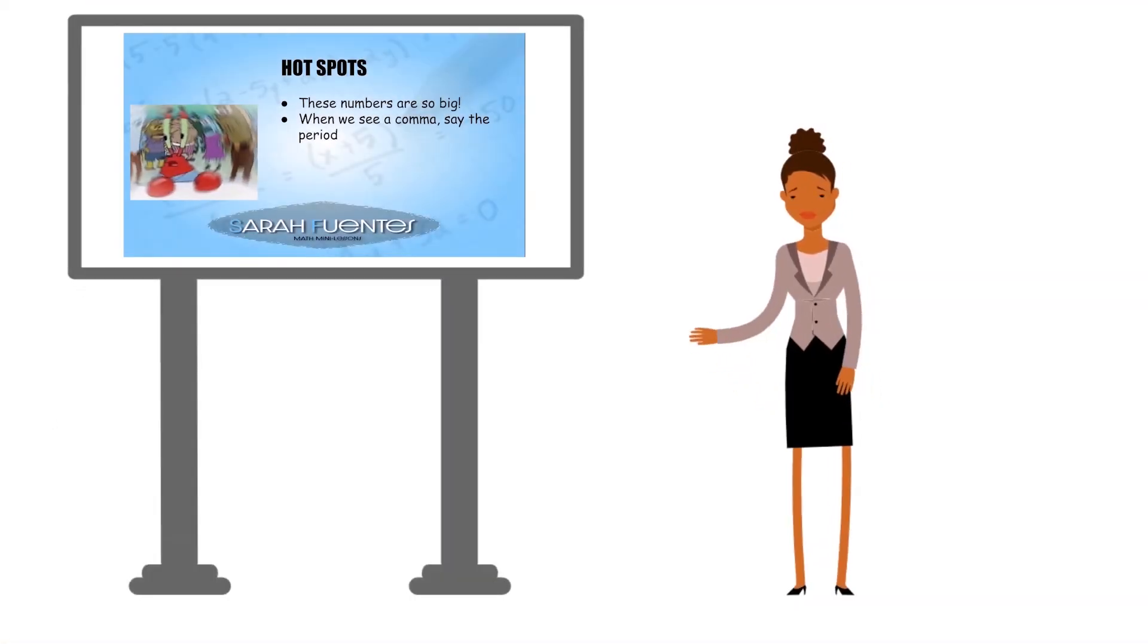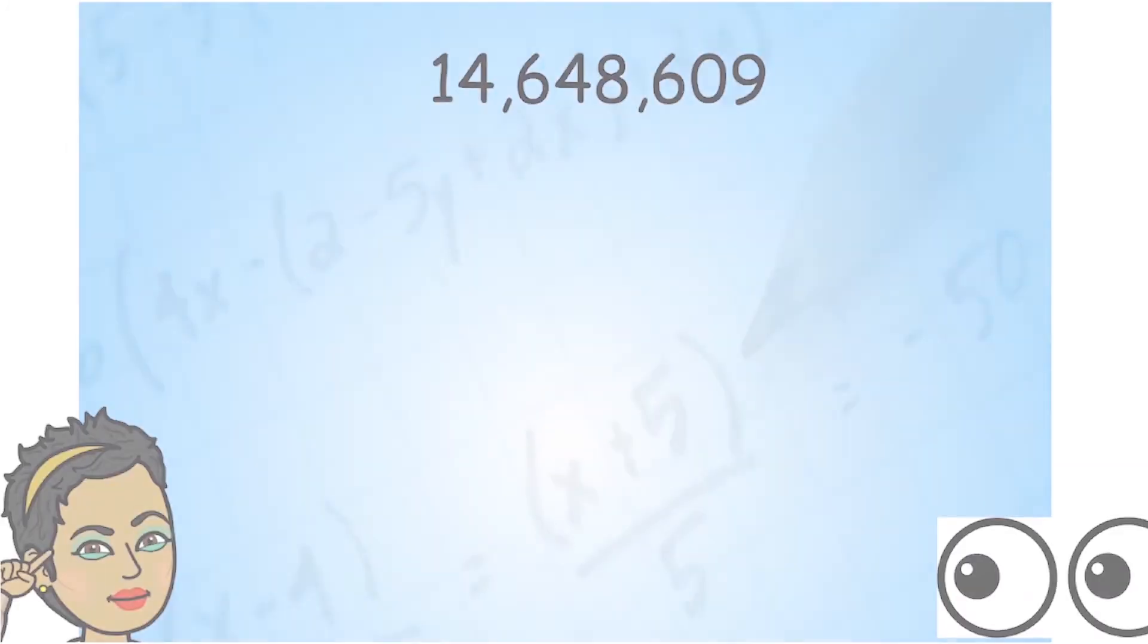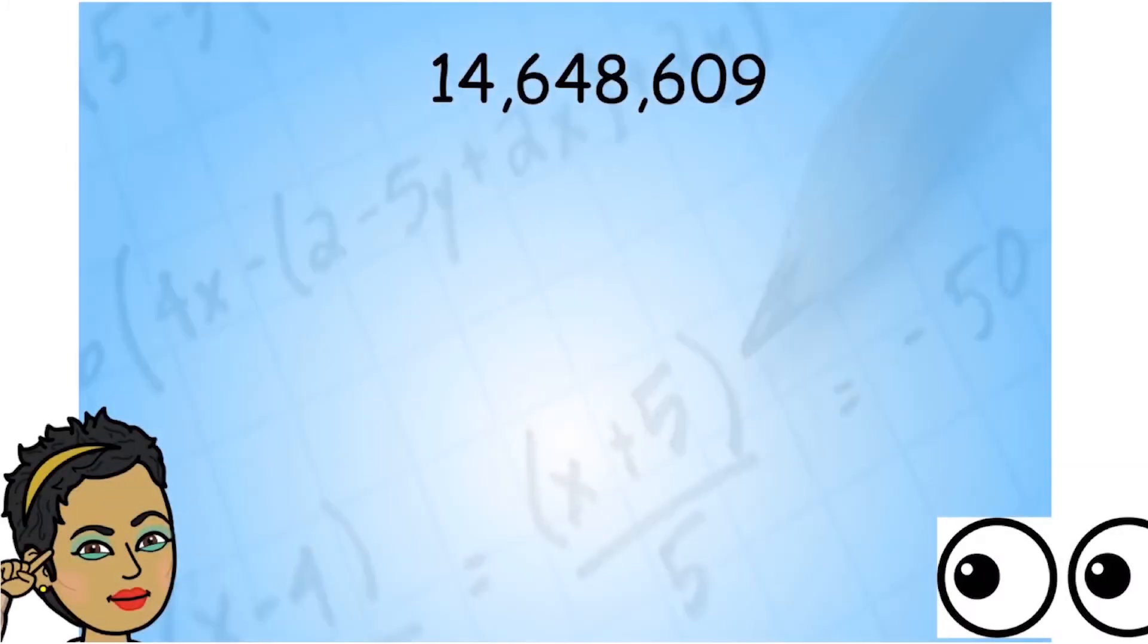Here's our second hot spot. When we see a comma, what do we say? Do we just say the period or do we say comma? What do we do? So what do we do with these commas? We don't always say them and we're not going to say them here. If there was a comma in a regular sentence, you would pause. The same thing happens when I'm reading a big number. When I see the comma, the comma is just going to tell me what period I'm in.